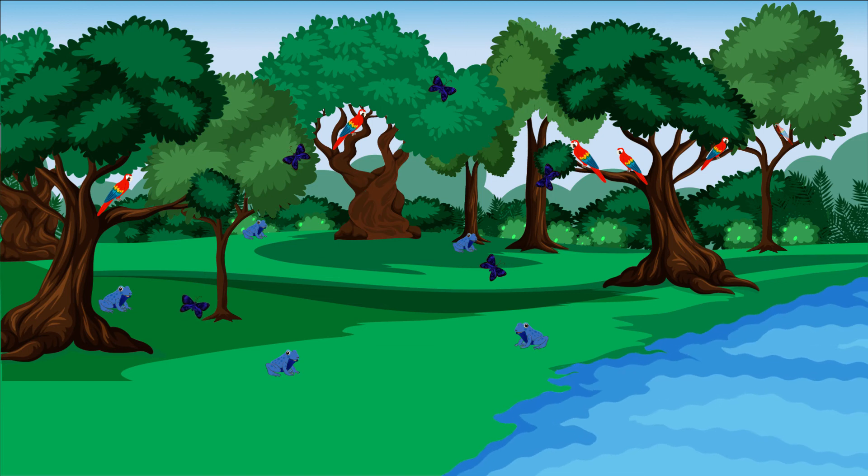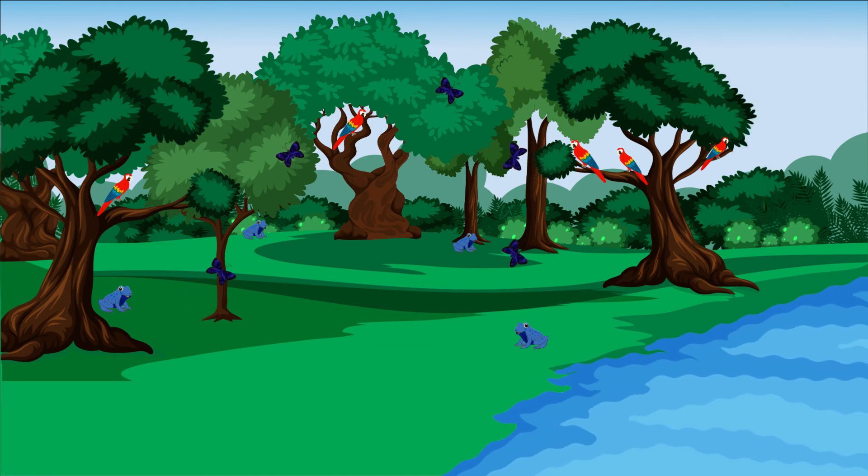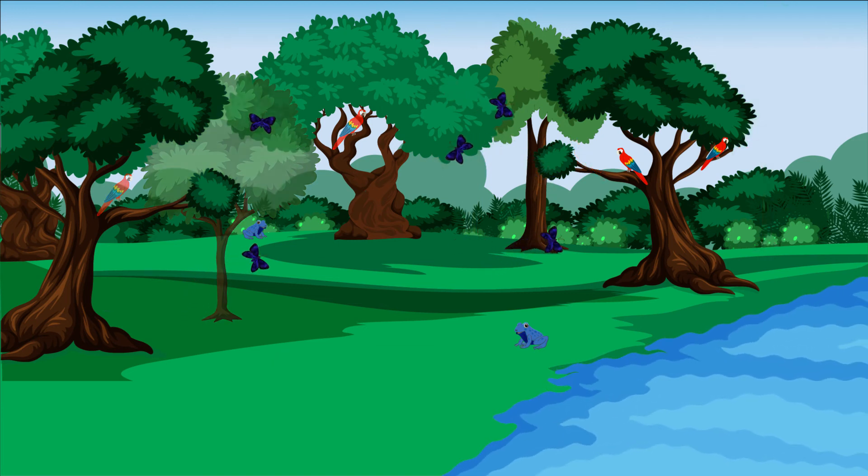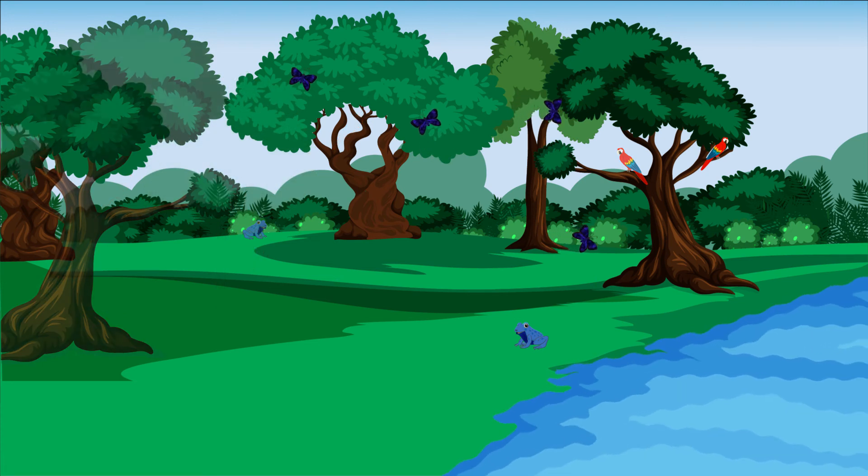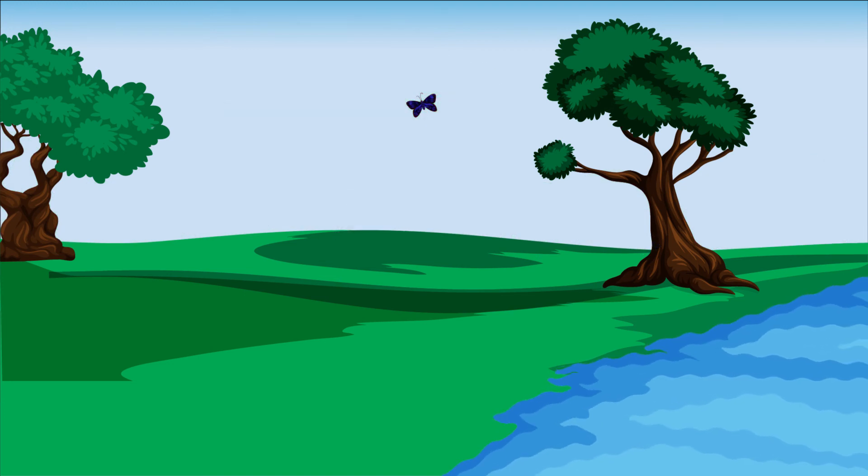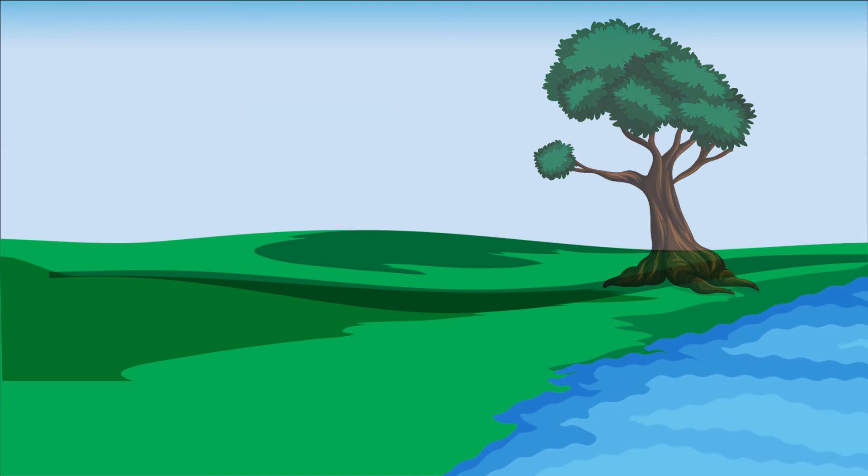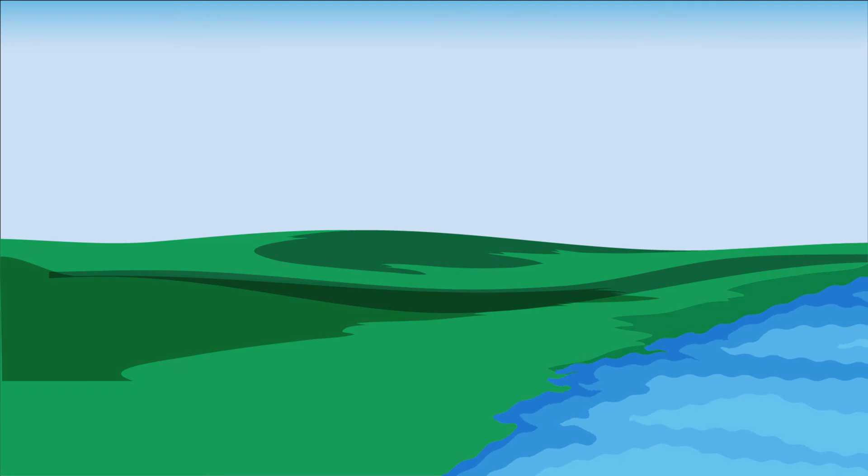About 80% of documented land species live in forests. Destroying their homes directly contributes to dwindling their numbers, potentially leading to their extinction. Replanting foreign trees won't help these animals survive since they don't have the same properties as native ones, and even if they did, it can take years for wildlife to adapt to using them.